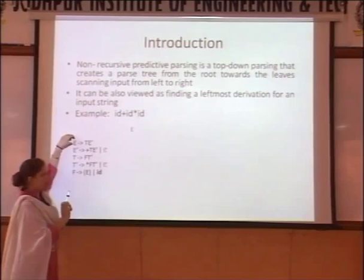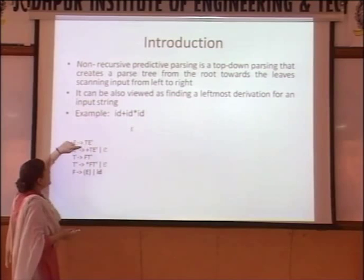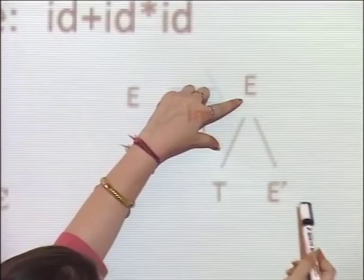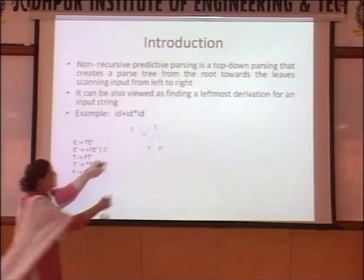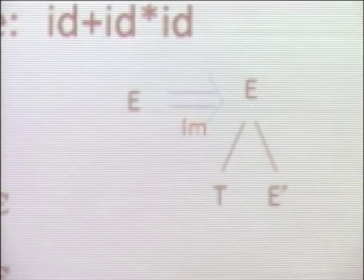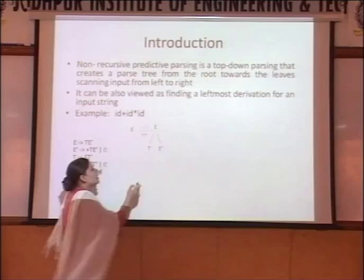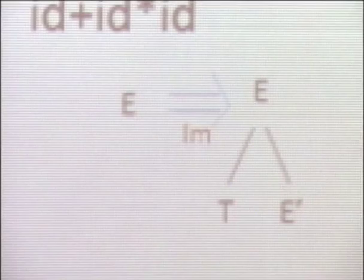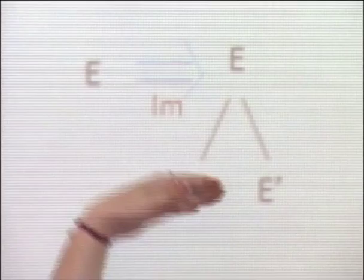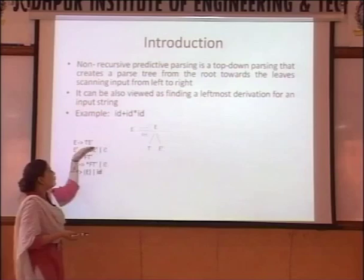Non-recursive predictive parsing begins from the starting symbol provided in the grammar set. This grammar set will be expanded for its respective production. The respective production is available as TE'. While deriving the next expansion, we will expand this particular node into two nodes, T and E'. We will start scanning the leaf nodes from left to right. If the leaf node symbol exists as a terminal symbol, we will simply consume it. If the symbol appears as a non-terminal symbol, we will expand that non-terminal symbol for its respective production.